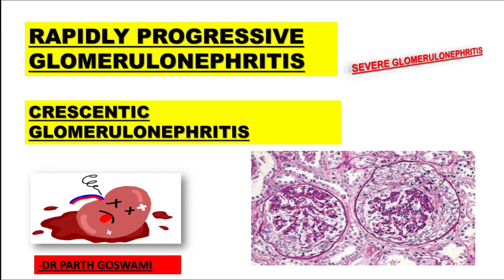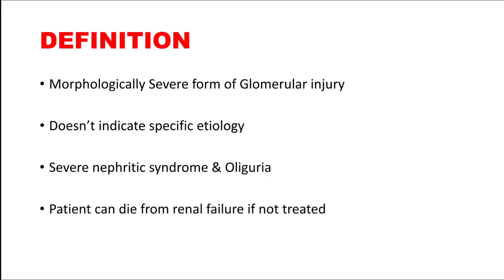In our previous lecture we have discussed that glomerular inflammation could be in the form of nephrotic syndrome or there could be nephritic syndrome. So this particular RPGN, rapidly progressive glomerulonephritis, is an example of nephritic syndrome. If you have not seen my previous lectures regarding glomerular disease, first visit the playlist or find the link in the description and see that video first to understand this topic in detail.